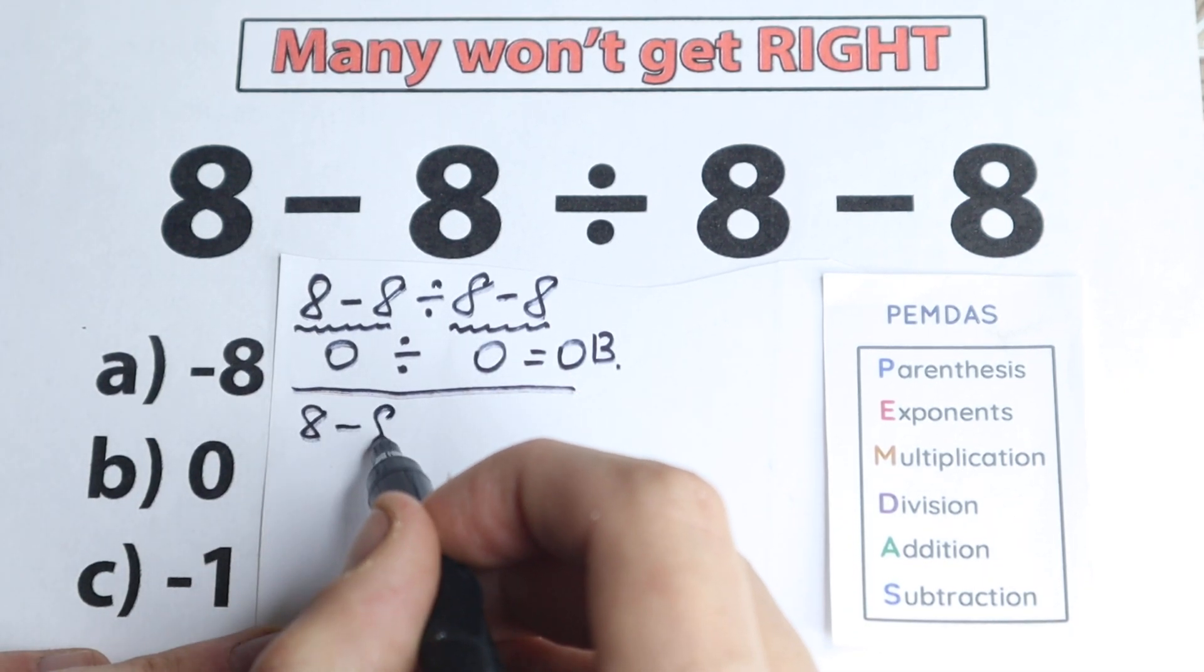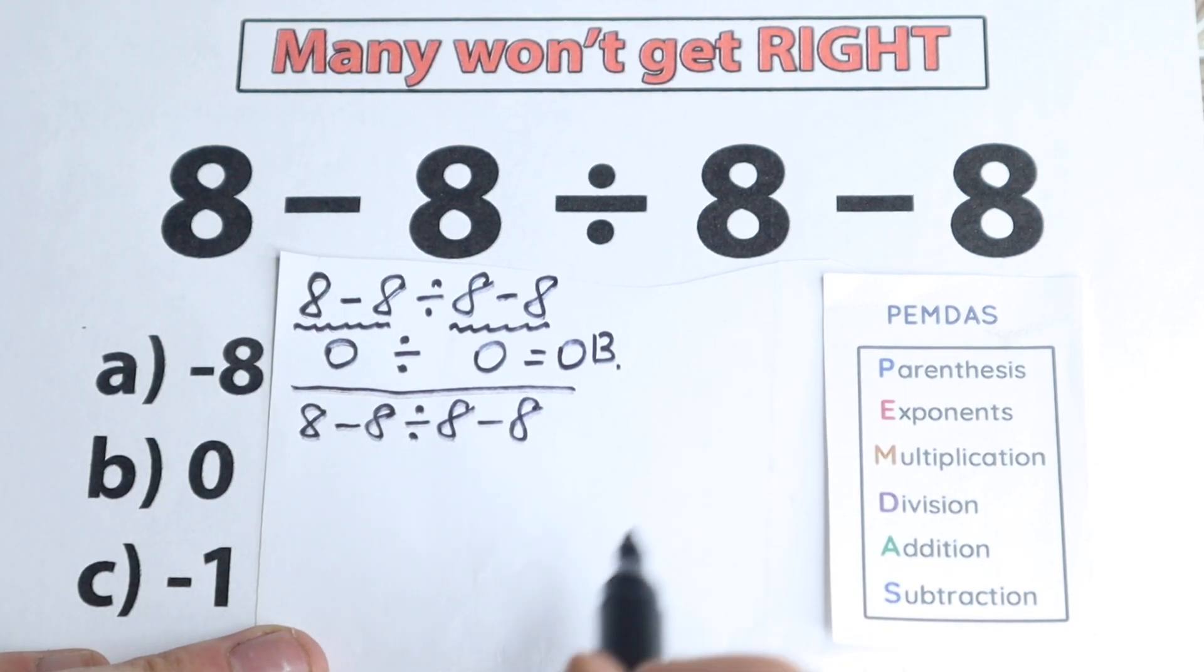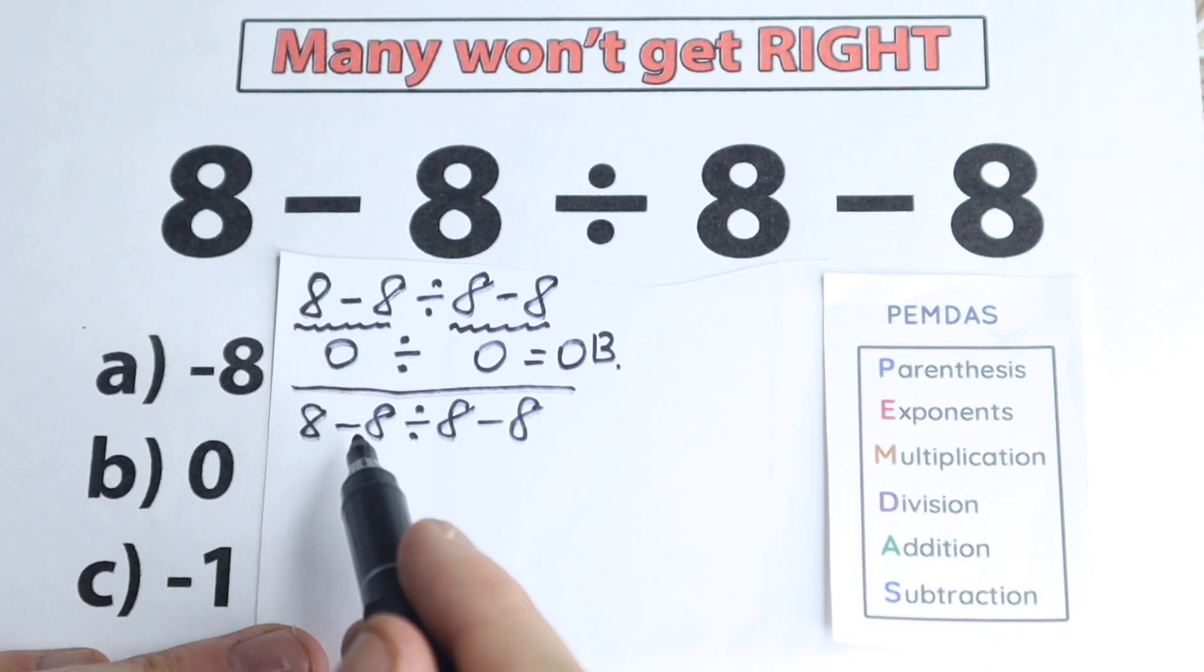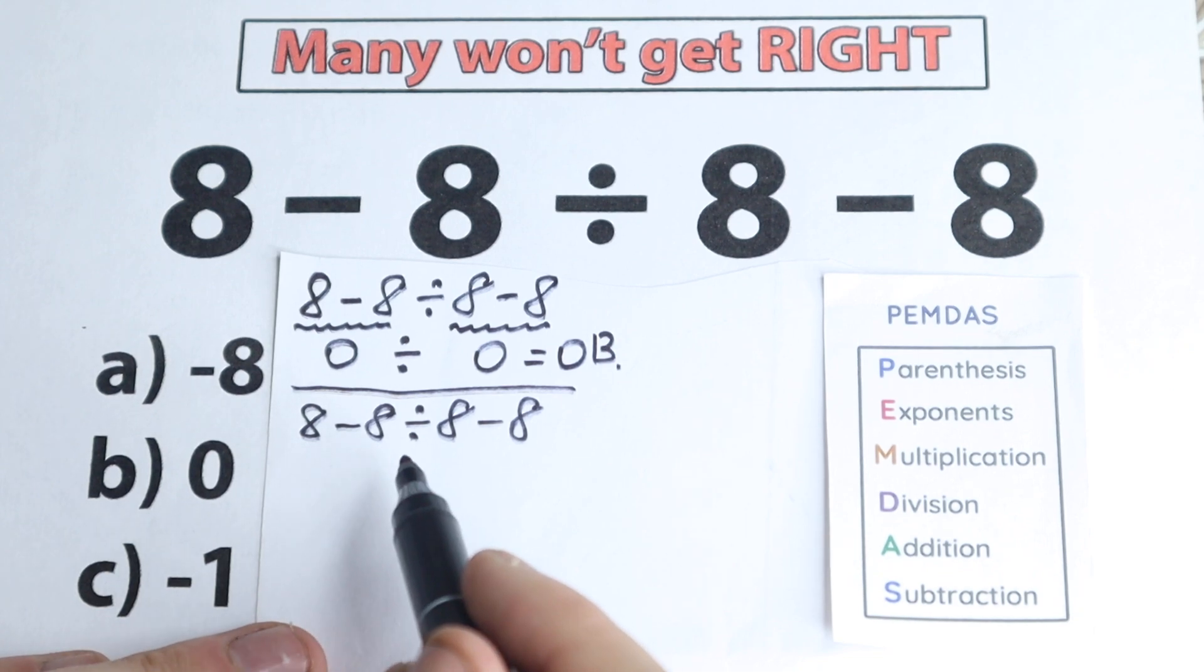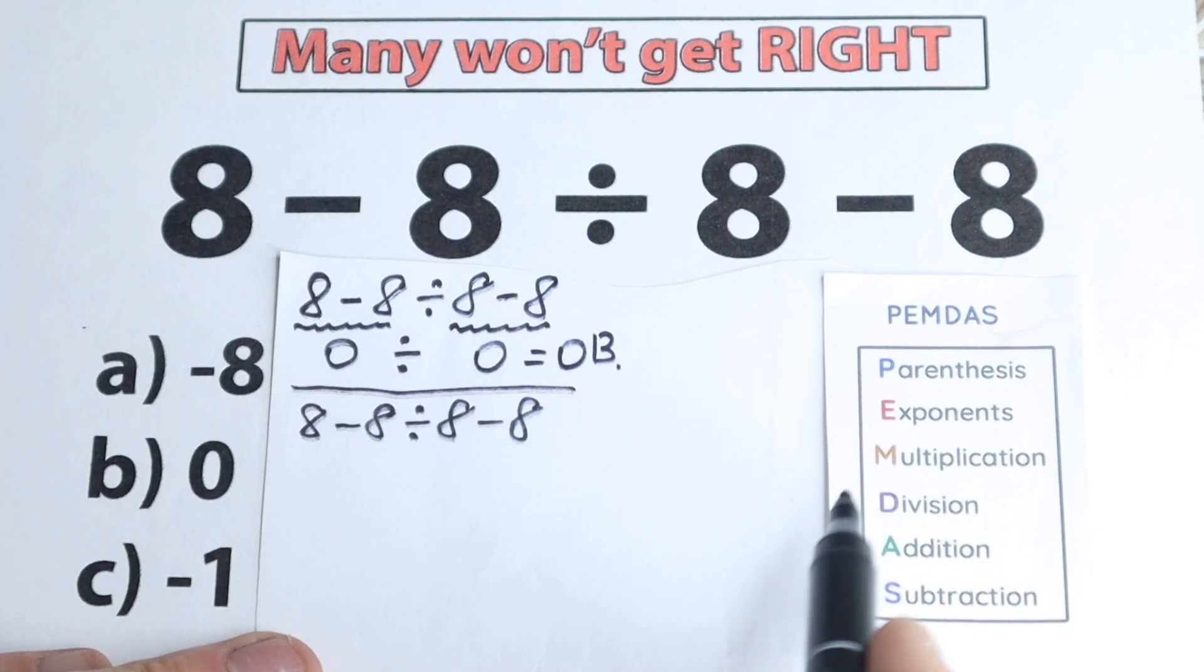so we have 8 minus 8 divided by 8 minus 8. OK, here is our question, here is our order. Because obviously whatever order of operation we select is going to create a different answer, right? So let's look at this PEMDAS, this is a correct math operation order,